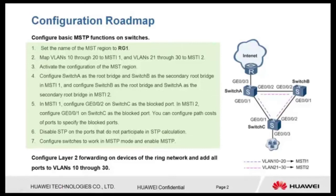Step 4: Configure switch A as the root bridge and switch B as the secondary root bridge in MSTi1, and configure switch B as the root bridge and switch A as the secondary root bridge in MSTi2. Step 5: In MSTi1, configure GE002 on switch C as the blocked port. In MSTi2, configure GE001 on switch C as the blocked port.